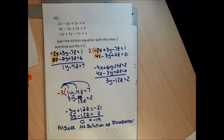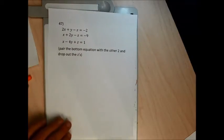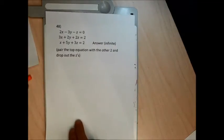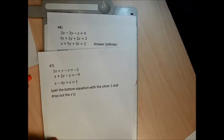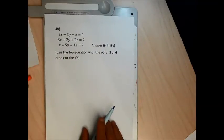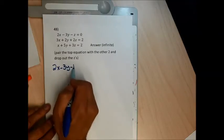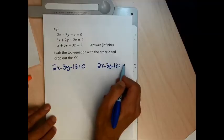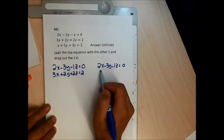My guess is the remaining problems will have infinitely many solutions. If you see all letters drop out and a true statement remains, you stop and say infinitely many solutions. For problem 48, I'll pair the top equation with the other two and drop out the z's. I wrote a 1 in front of that z to make it clearer. Pairing: top with middle, and top with bottom.